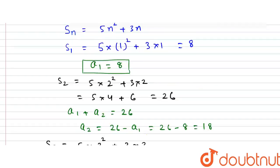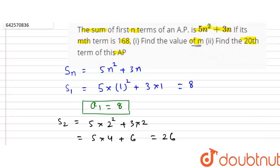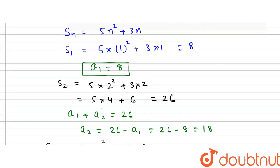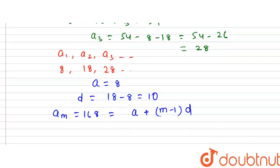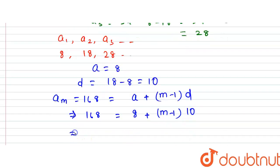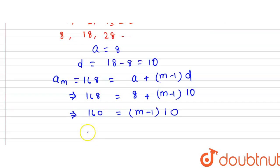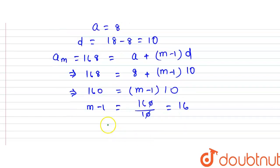The first part asks us to find the value of m if the mth term is 168. The mth term am = 168. Using the formula am = a + (m−1)×d, we get 168 = 8 + (m−1)×10. So 160 = (m−1)×10, meaning m−1 = 16, therefore m = 17. This is the answer to the first part.